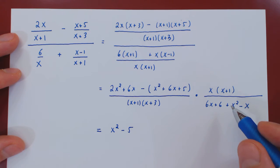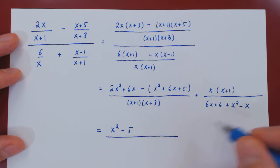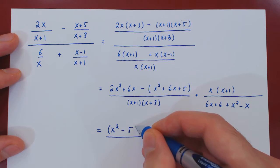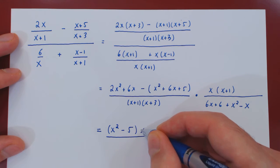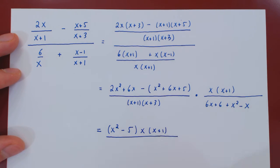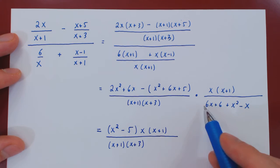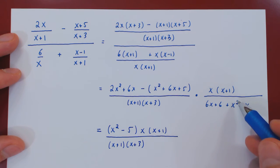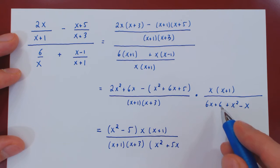Well, what about this piece? Let me rewrite this part first. So, this is now this simplified, times x(x + 1), over (x + 1)(x + 3). Now, what about this? Well, we have an x², 6x - x is 5x + 6. So, this will be x² + 5x + 6.